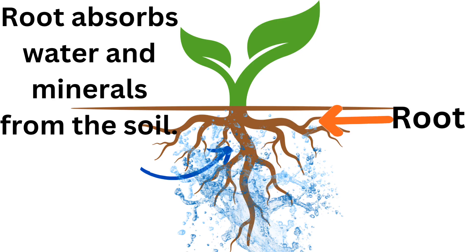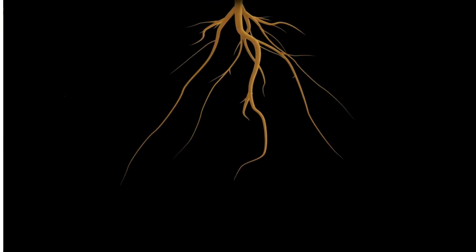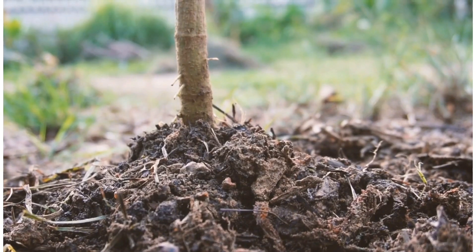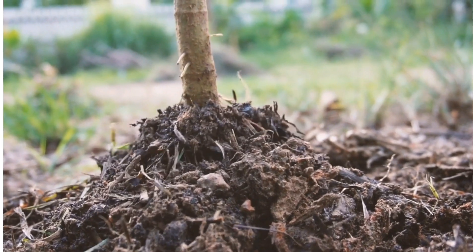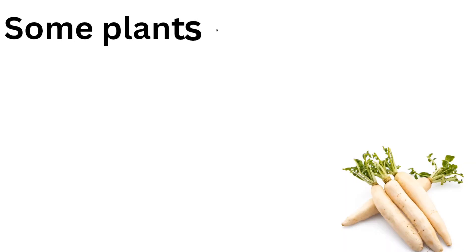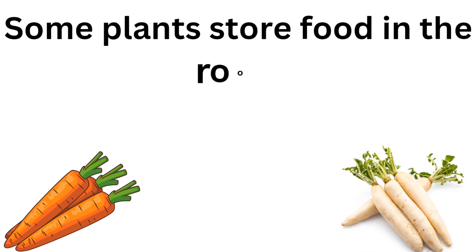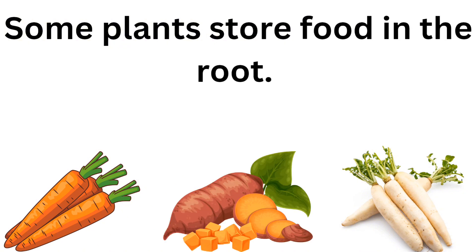The part of the plant that lies underground is called the root system. Roots absorb water and minerals from the soil. On the basis of types of plants, the roots are different. Roots fix the plant body in the soil, and in some plants, roots also store food that we eat.